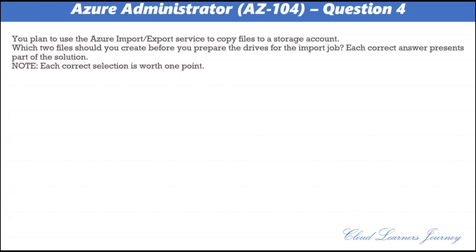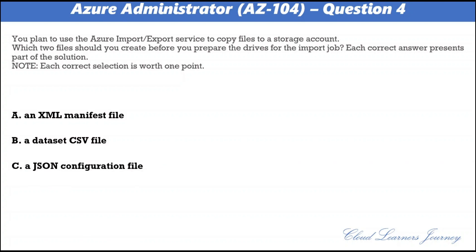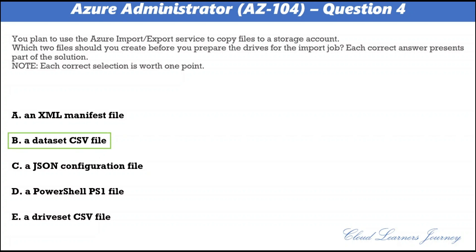Question number four. You plan to use the Azure Import/Export service to copy files to a storage account. Which two files should you create before you prepare the drives for the import job? The options are: A) an XML manifest file; B) a dataset CSV file; C) a JSON configuration file; D) a PowerShell PS1 file; E) a drive set CSV file. The correct answers are B: a dataset CSV file, and E: a drive set CSV file. You need to modify the dataset.csv file in the root folder where the tool resides, depending on whether you want to import files, folders, or both.